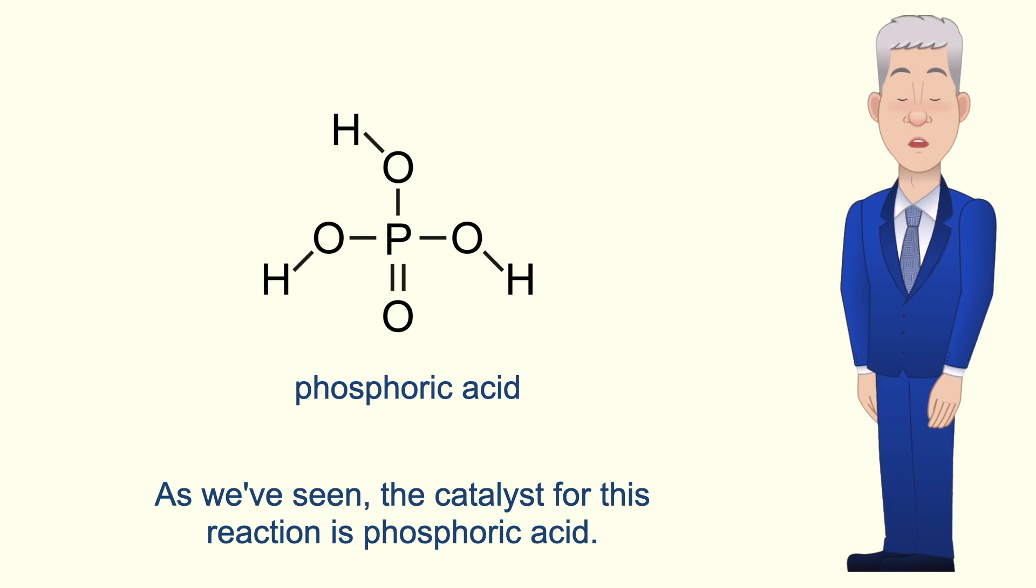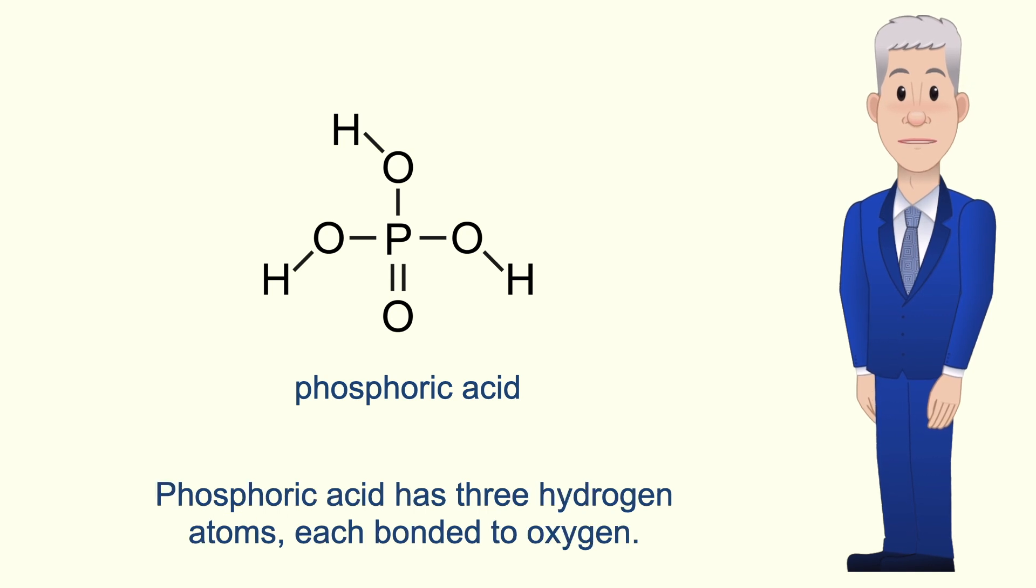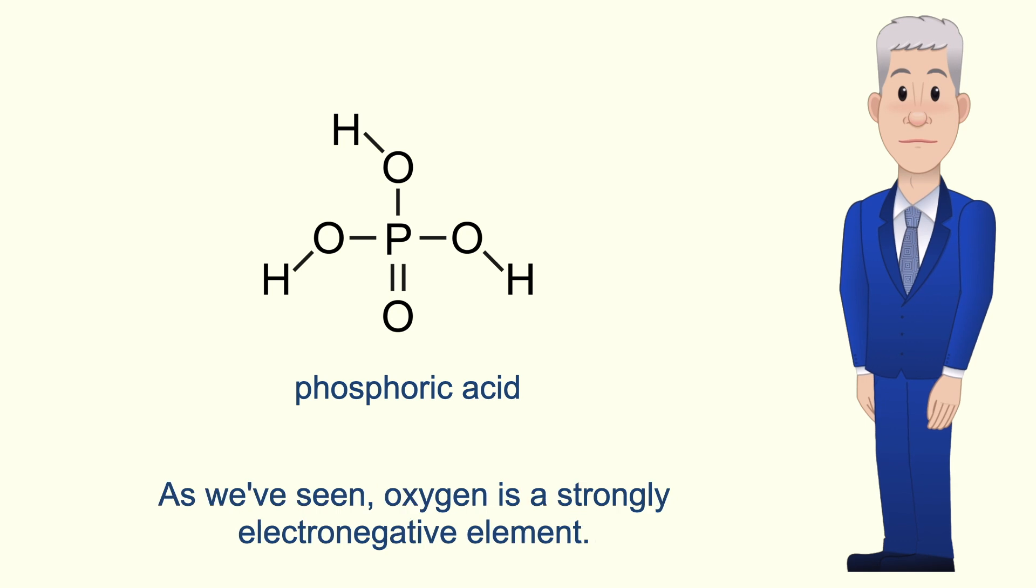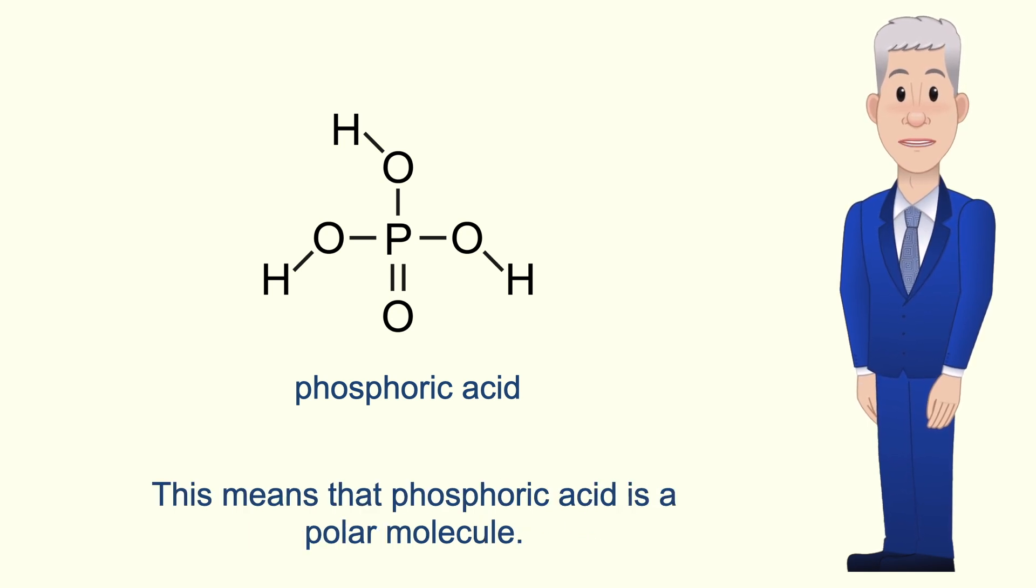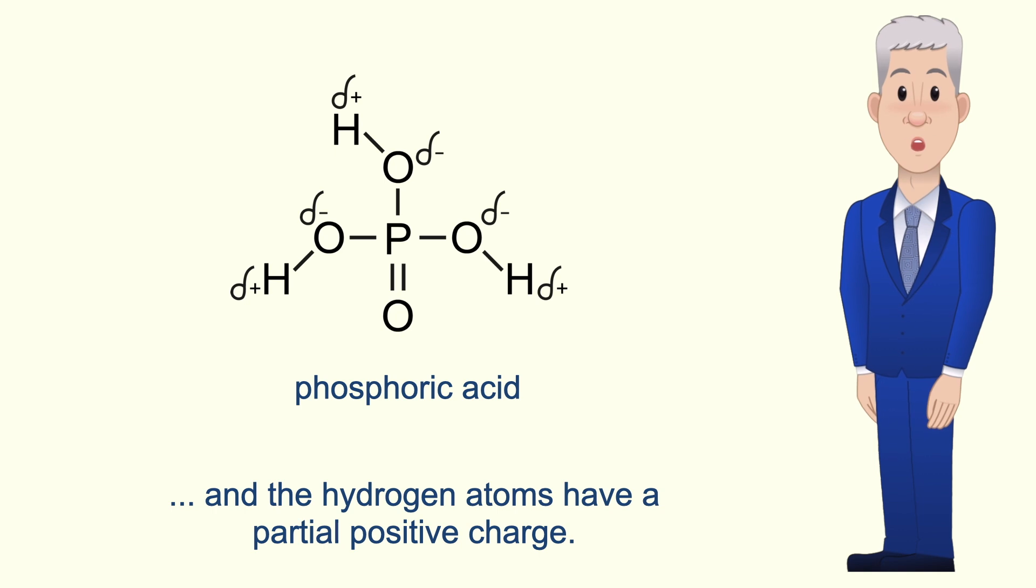The catalyst for this reaction is phosphoric acid. I'm showing you the structure of phosphoric acid here. Phosphoric acid has three hydrogen atoms each bonded to oxygen. Oxygen is a strongly electronegative element so this means that phosphoric acid is a polar molecule. The oxygen atoms have a partial negative charge and the hydrogen atoms have a partial positive charge.